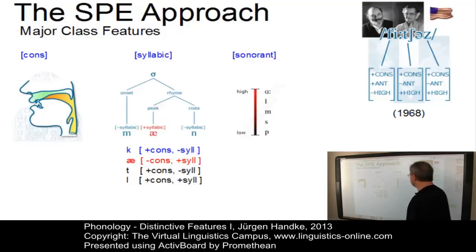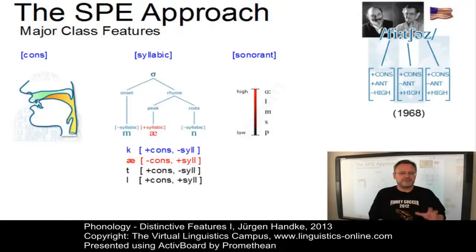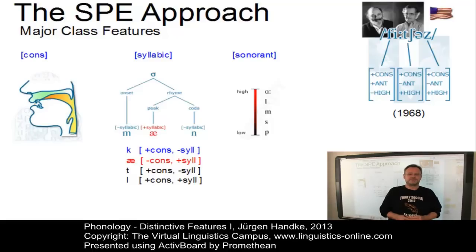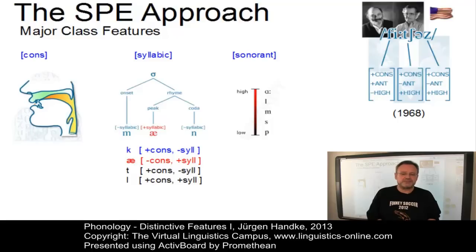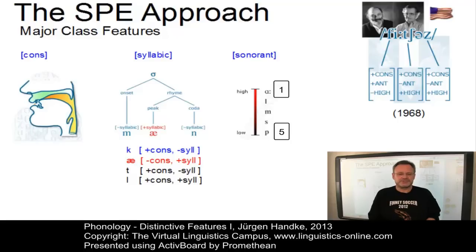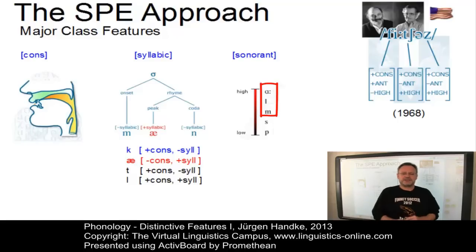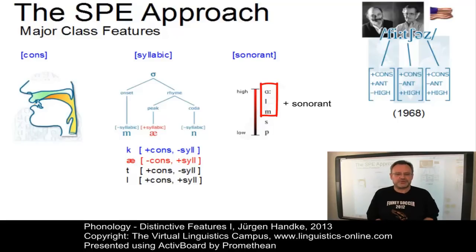Speech sounds can be defined as sonorant if the pressure of air behind the constriction is approximately equal to the ambient air pressure. According to their amount of sonority, all speech sounds can be ranked, where one is the highest degree of sonority and five the lowest. The three highest — vowels, liquids and nasals — are defined as plus-sonorant, while the two lowest — fricatives and plosives — are minus-sonorant.